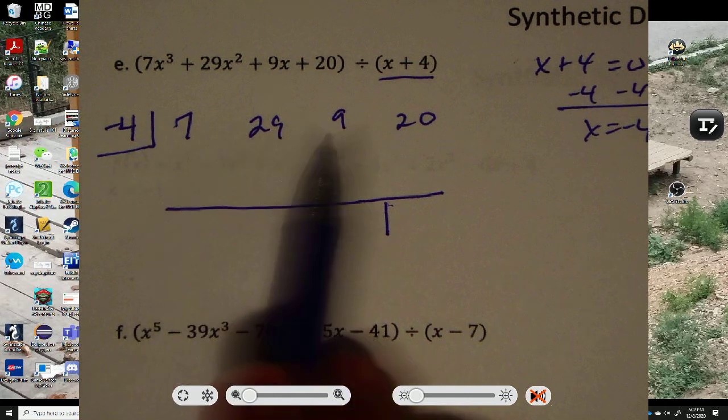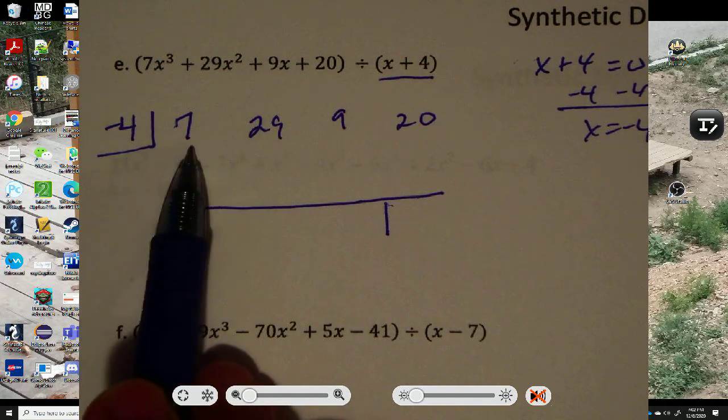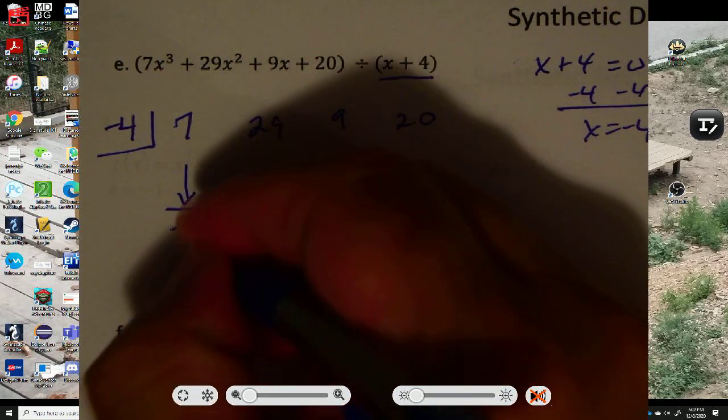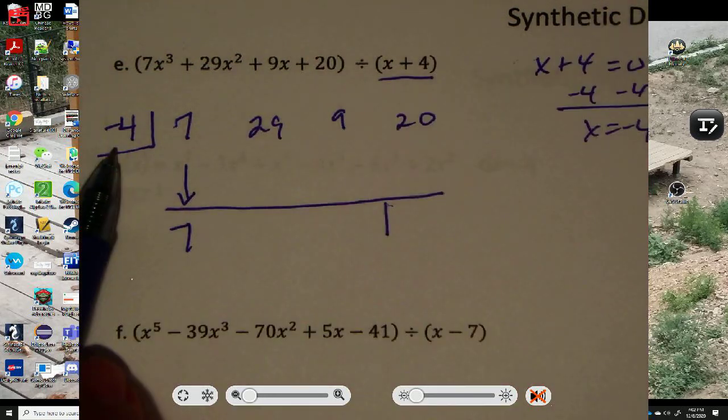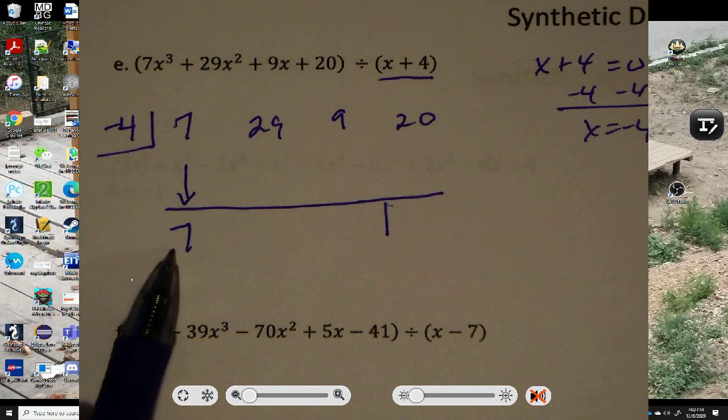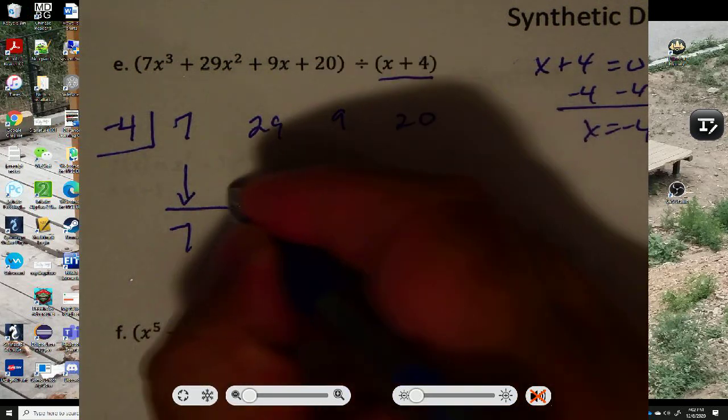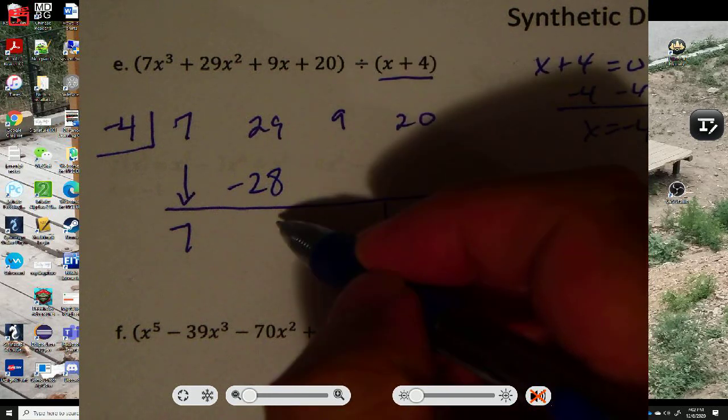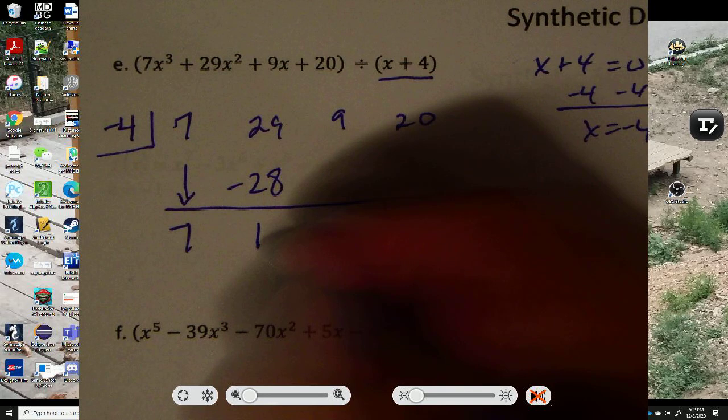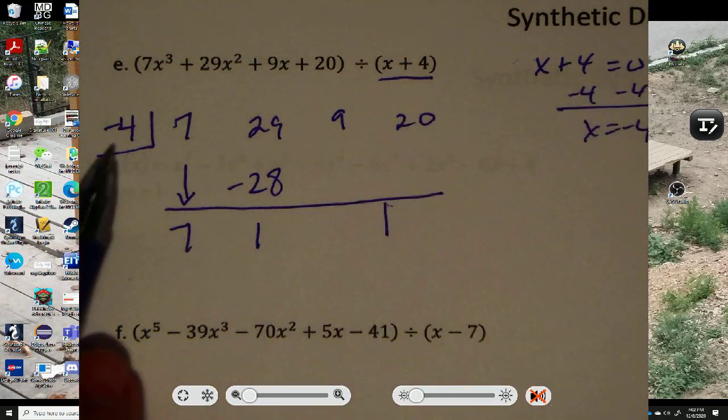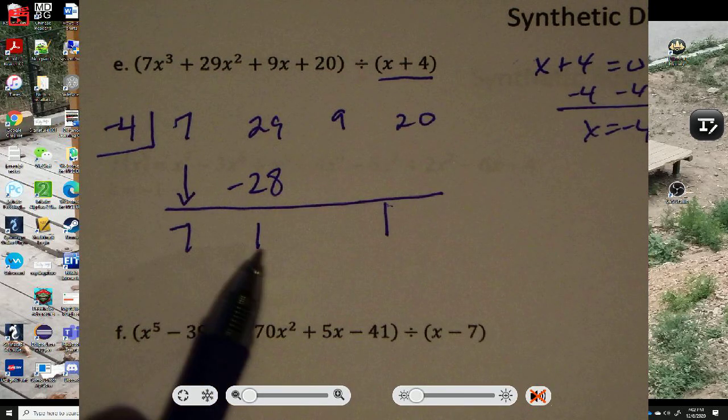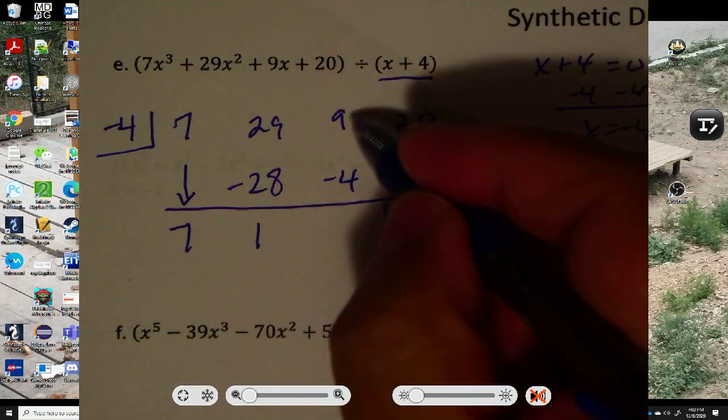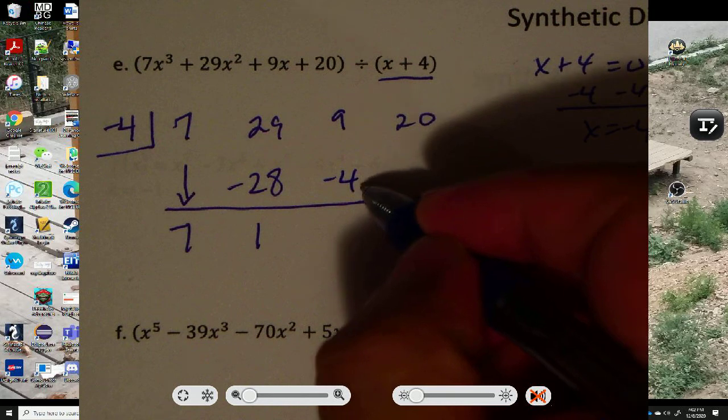Once you've got all the numbers copied, and you've got your divisor here, you're going to bring the first number down. It comes down as a 7. And then you're going to take the negative 4 and multiply it by 7. That's going to make negative 28. And then you're going to add 29 plus negative 28 is 1.